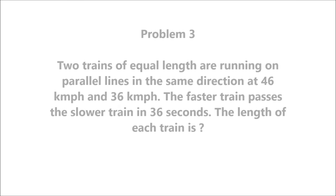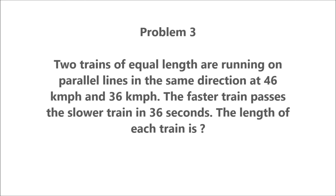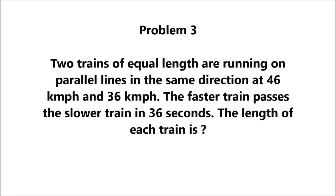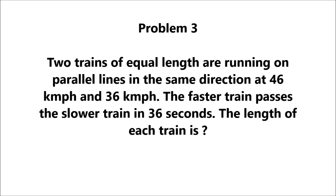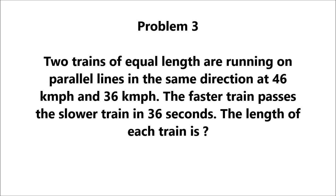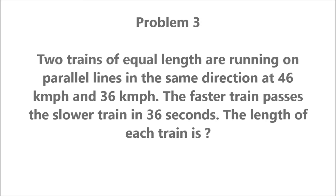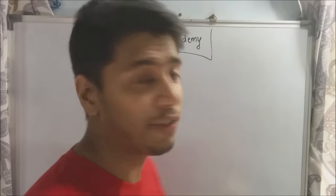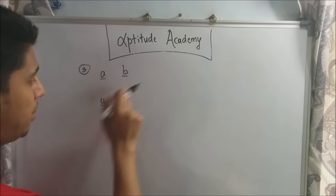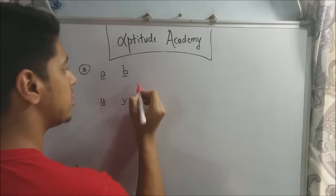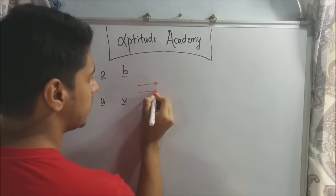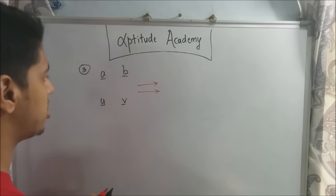Problem 3. Two trains of equal length are running on parallel lines in the same direction at 46 kilometers per hour and 36 kilometers per hour. The faster train passes the slower train in 36 seconds. The length of each train is? Alright, now for the third sum, you need to rewrite this ABUV table. Now, they are both moving in the same direction. So you will keep the arrows like this. Just to remind us that they are moving in the same direction.